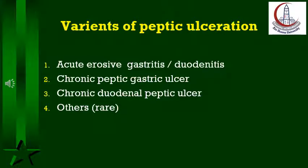Cushing ulcers are stress ulcerations occurring in patients with head injury. The second variant is chronic gastric ulcer, which is most common in men, the elderly, and lower socioeconomic class, and is less common than chronic duodenal ulcers. The third and most prevalent variant is chronic duodenal ulcer, which occurs in the first part of the duodenum in most cases. With gastrinoma, ulceration may involve other parts of the duodenum as well.